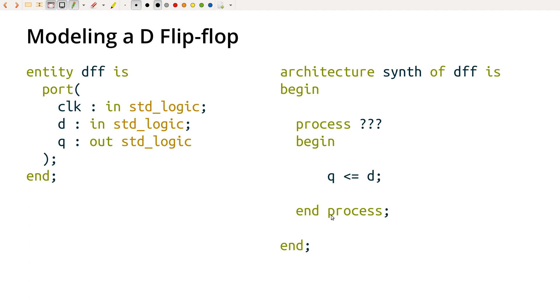Okay. So now for the sensitivity list, what should this be? Q changes when, and only when, the clock goes from low to high. Remember, so we've got, if we have our clock signal, when it goes from low to high, that's when we want to trigger the process.